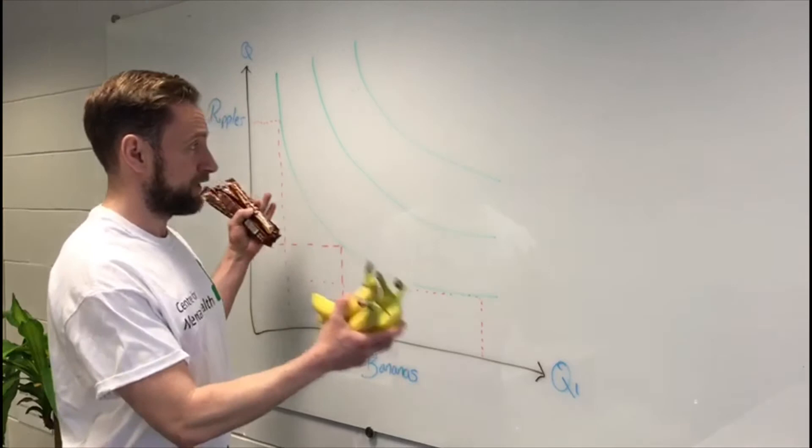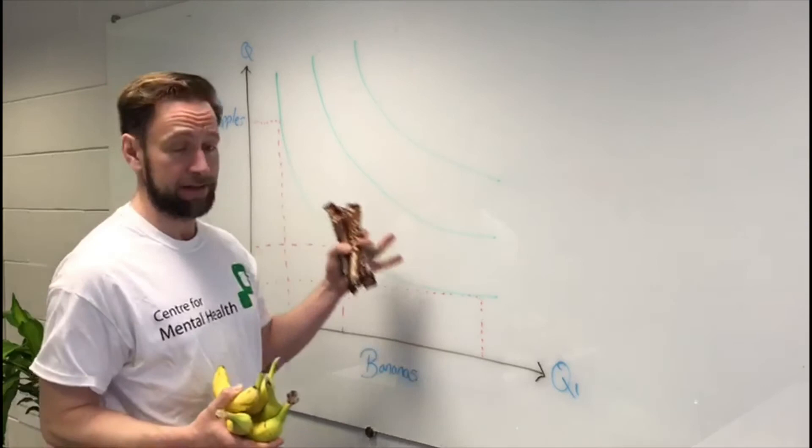Really, the point of this is to say this graph demonstrates why commissioning and being a commissioner is tough. Because you have to essentially estimate what these curves look like for a load of people in a community that you don't know and have never met.